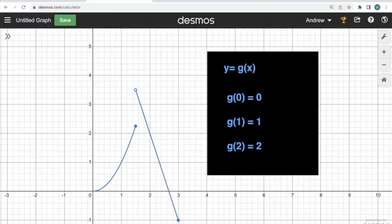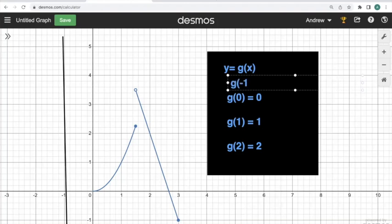This is often a little bit jarring for people, and I understand why. For instance, this function, which is given by this graph of y equals g of x, if I draw a line at x equals negative one, I don't see anything. So g of negative one is undefined because there's no graph at x equals negative one. If I look at x equals zero, I see that g of zero is equal to zero.